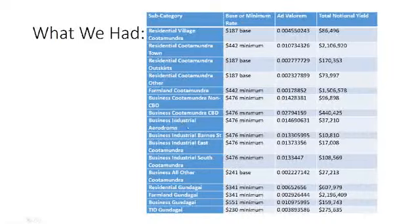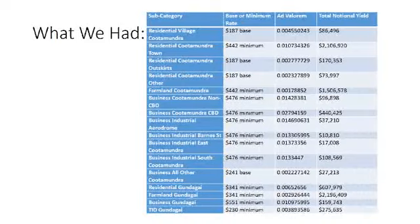There was also a curious situation with business: CBD business tax rate of 0.028, non-CBD half as much — the land was being used for the same purposes. And there were four different types of industrial land — business industrial aerodrome, industrial Barn Street, industrial East, industrial South — all with very different tax rates: 0.0146 versus 0.0133. Why? They were all industrial. What's happened over time is these things were implemented many years ago and because of rate capping, compounding effects, new land valuations and subdivisions, those tax rates slowly stretched further and further apart.